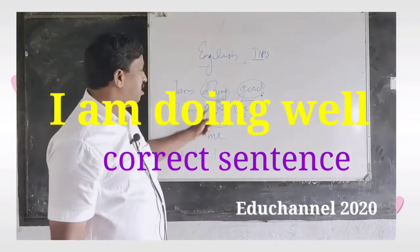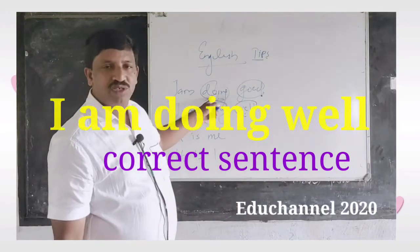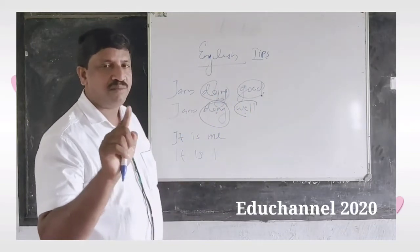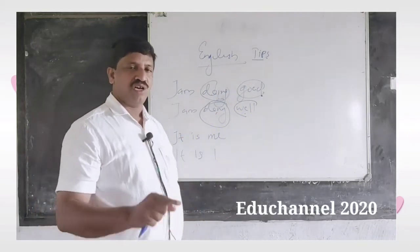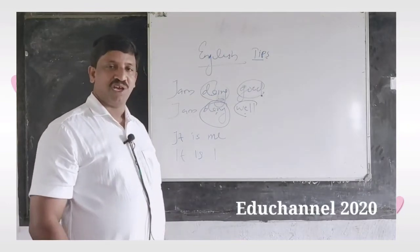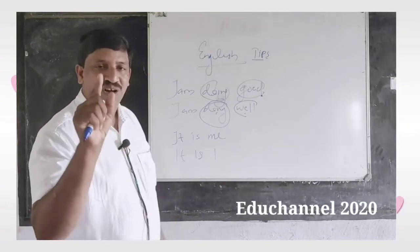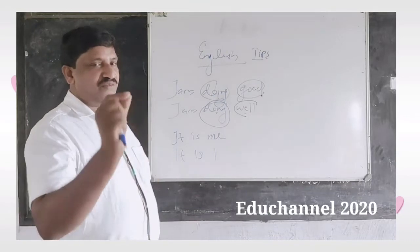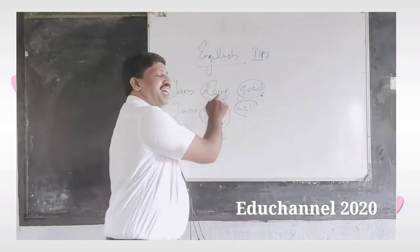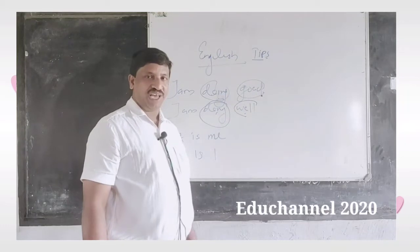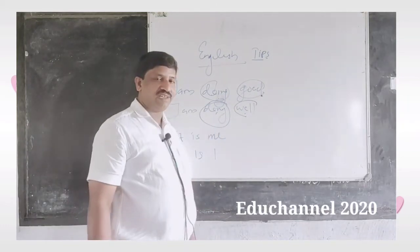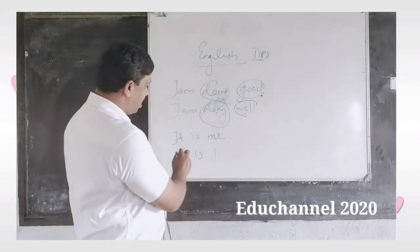In spoken language you can say 'I am doing good,' but understand that it implies you are doing your actions like a superhero. If you want to say your work is going well, you should say 'I am doing well.' So 'I am doing well' is the correct sentence to use in English.